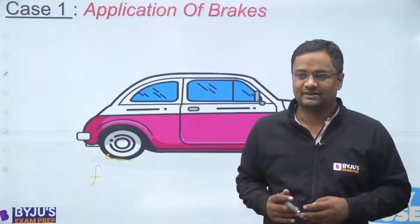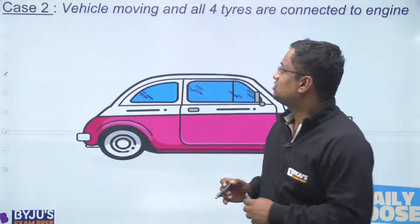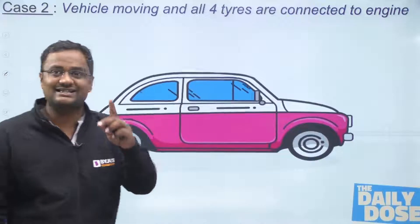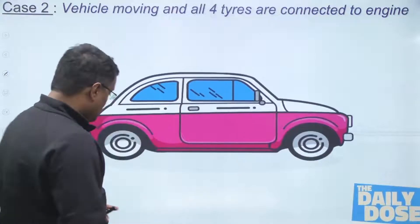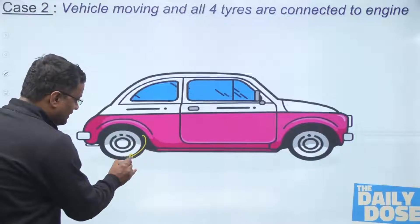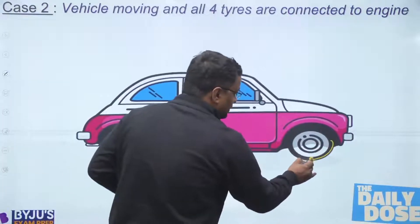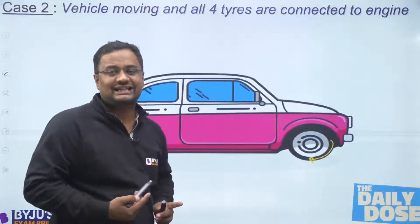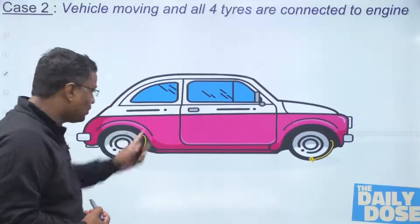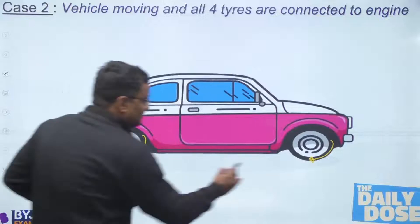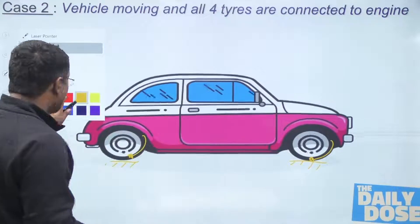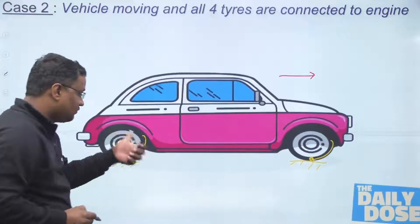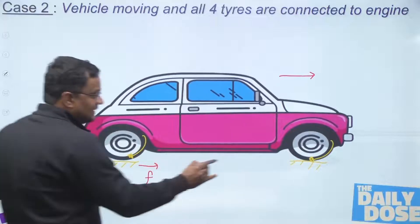Case two: the vehicle is moving forward, there are no brakes, and all four tires are connected to the engine — meaning all tires have a torque and are rotating. There is no skidding; there is pure rotation. Since all four tires are connected to the engine, all are rotating. With respect to the ground, the tires are moving backward, so friction on every tire will be forward.